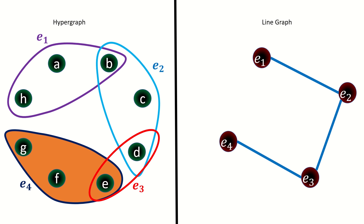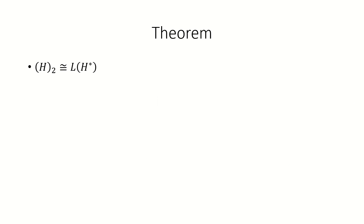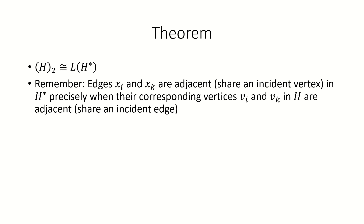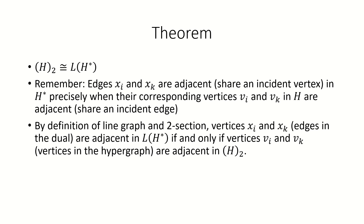Let's look at an important theorem relating line graphs to two sections. The theorem states that the two section of a hypergraph is isomorphic to the line graph of the dual of that hypergraph — in other words, taking the two section is basically the same as taking the dual and then taking the line graph. This is because the edges of the dual correspond to the vertices of the original hypergraph, and a pair of edges in the dual are adjacent when their corresponding vertices in the original hypergraph share an incident edge. By the definitions of line graph and two section, a pair of vertices in the line graph of the dual are adjacent precisely when the corresponding vertices in the two section are adjacent, giving an isomorphism mapping v_i to x_i.